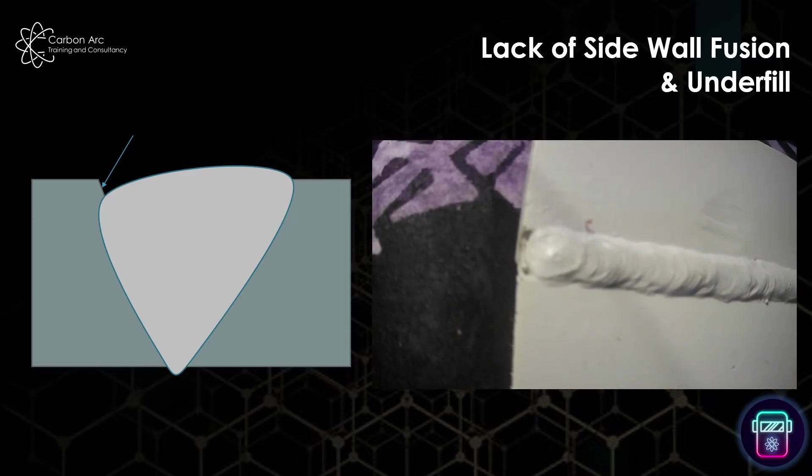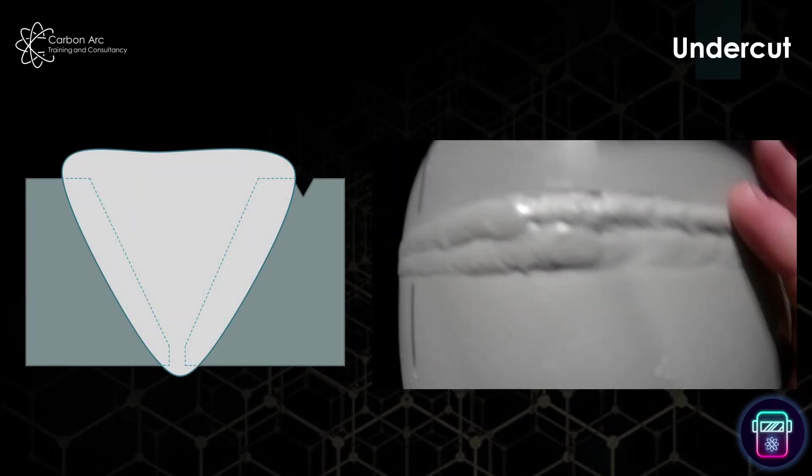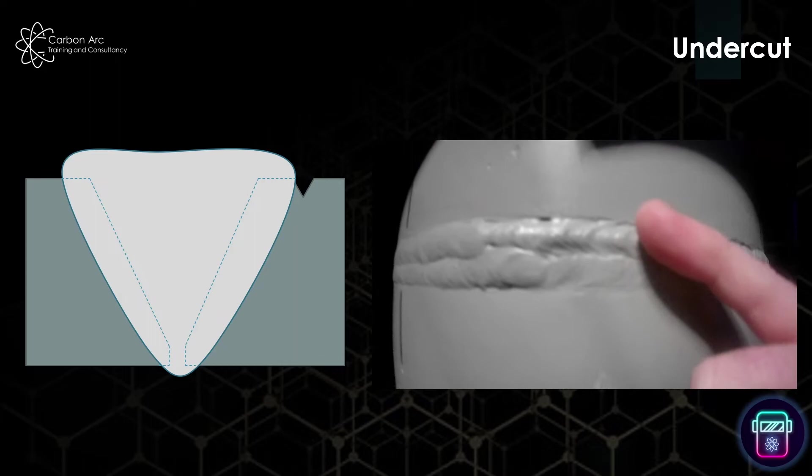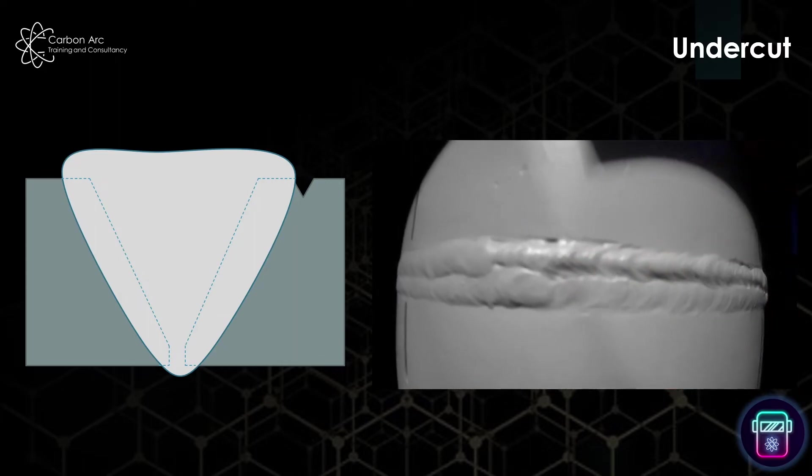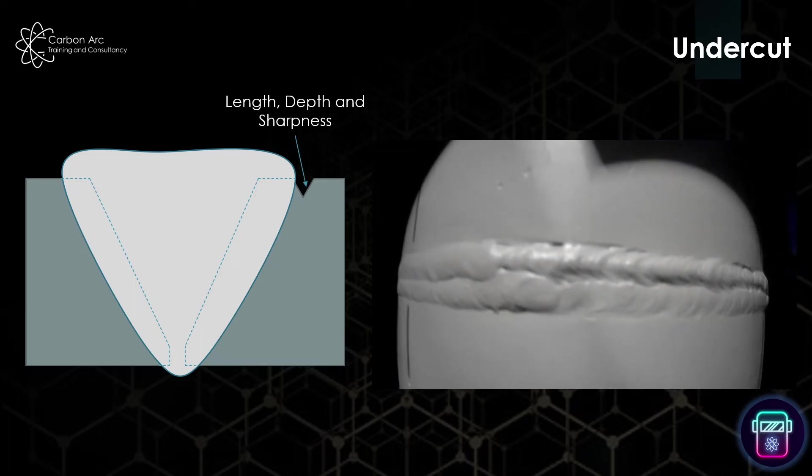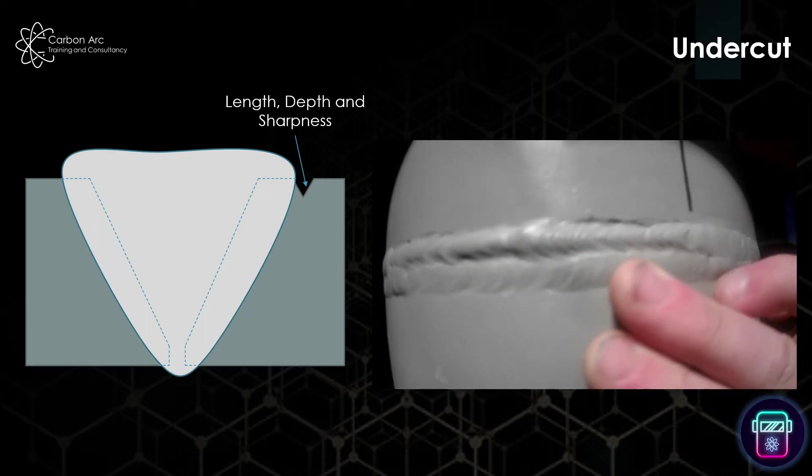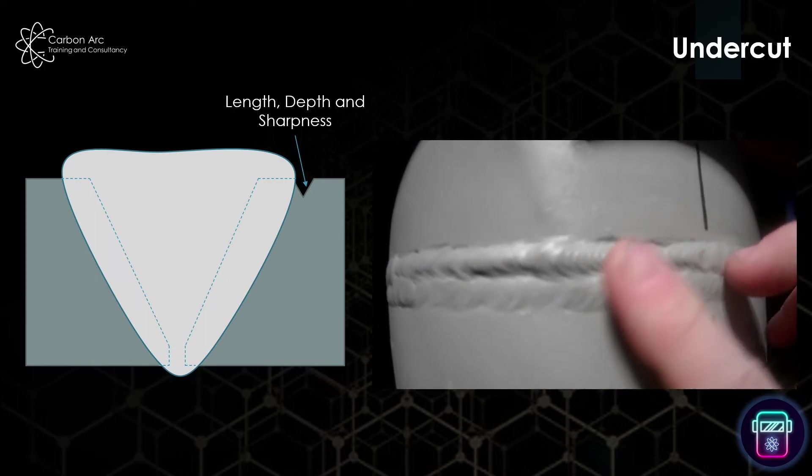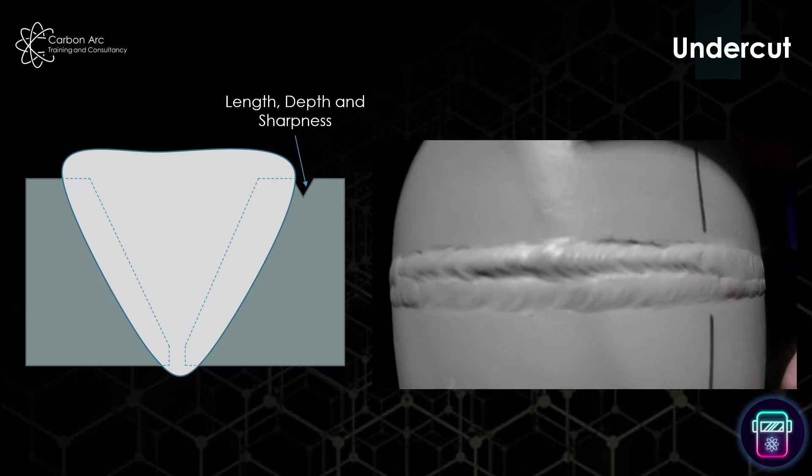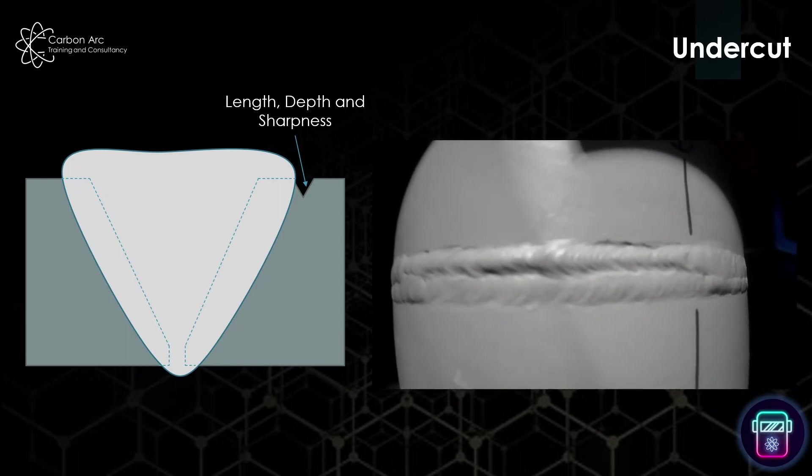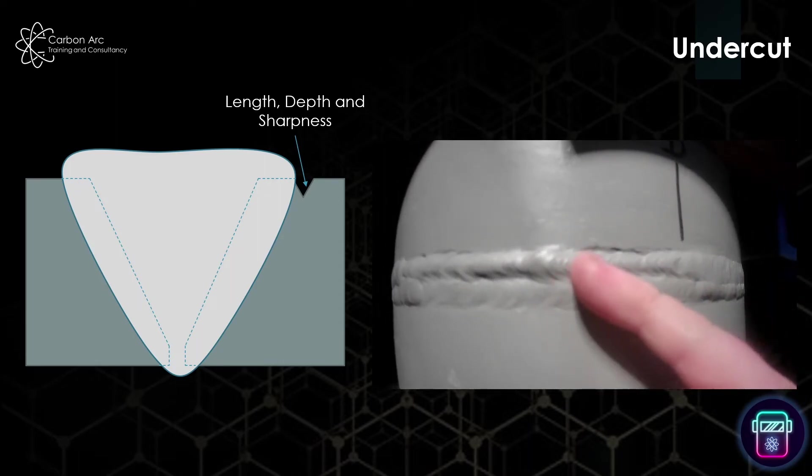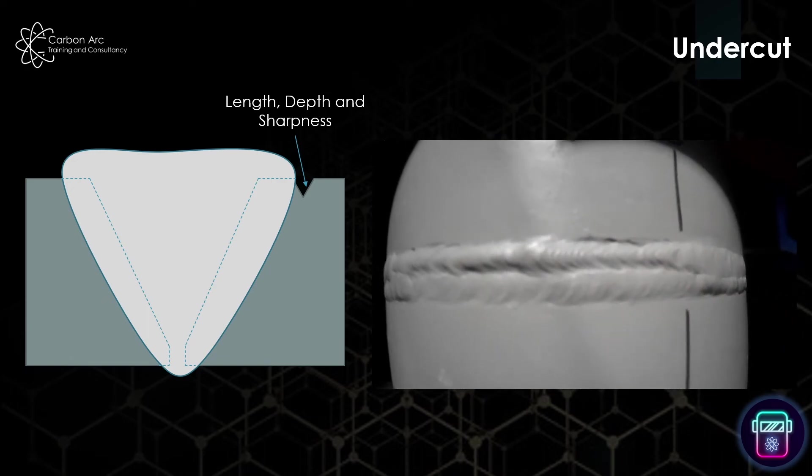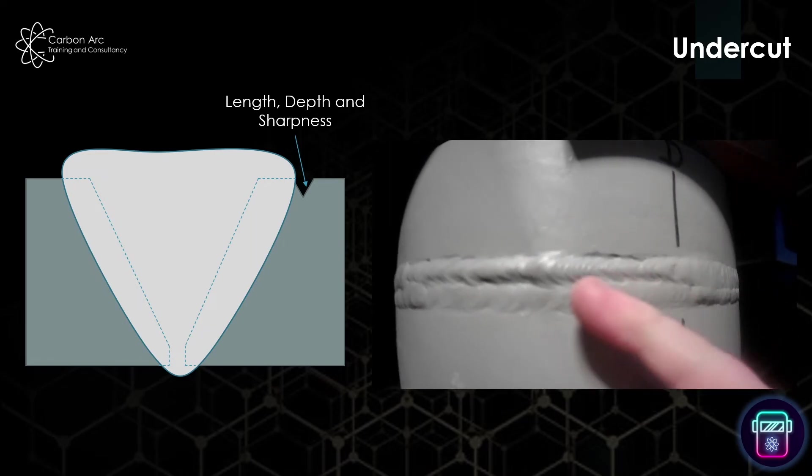Looking at undercut, what we're looking for is anything which has melted the parent material but has left this nick type defect in its position. Normally we're trying to measure length, depth, and sharpness to it. Most standards will say that no defect is allowed to be sharp, but they will give varying acceptance criteria for its length and depth depending on if you're in static or severe cyclic sort of loading conditions. Try to make sure you get all three measurements - length, depth, and sharpness.